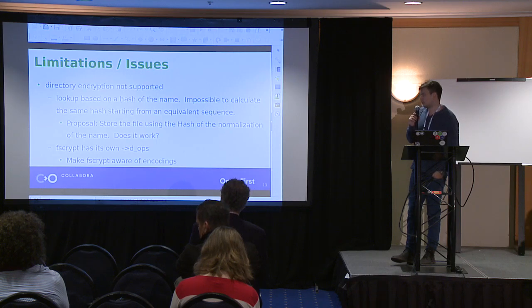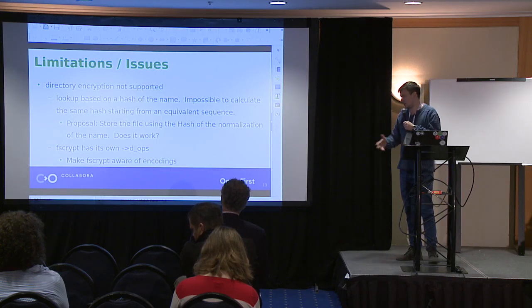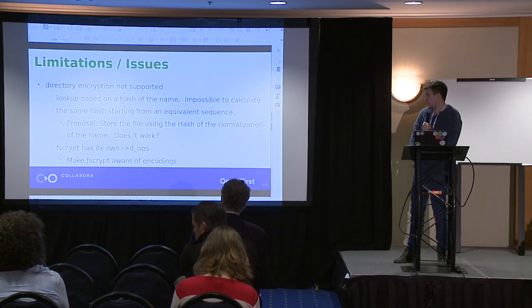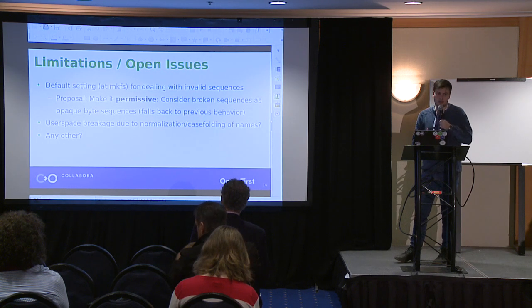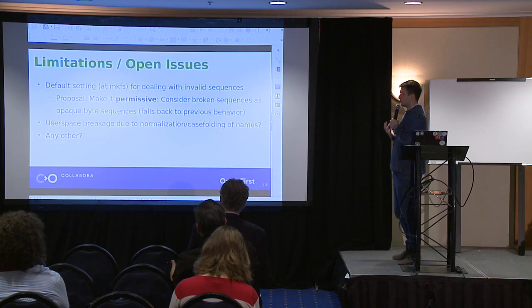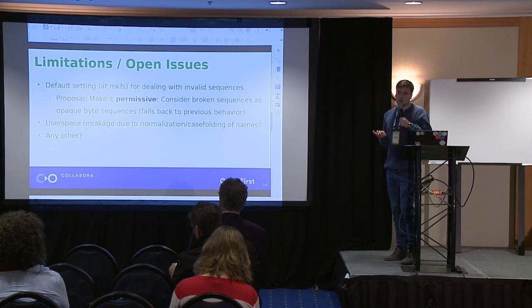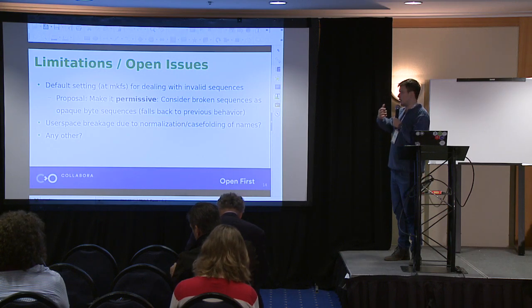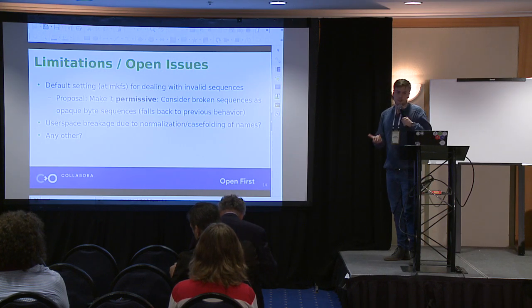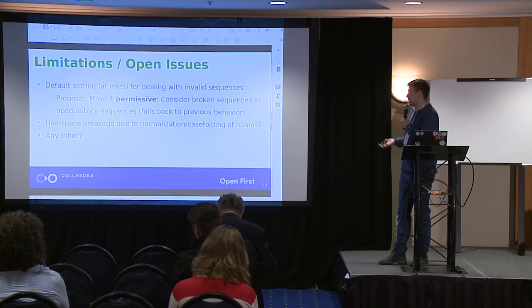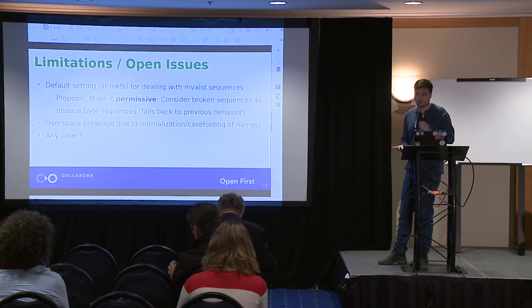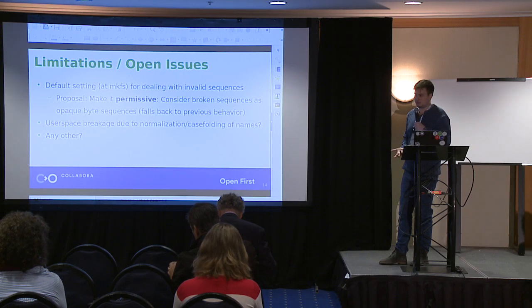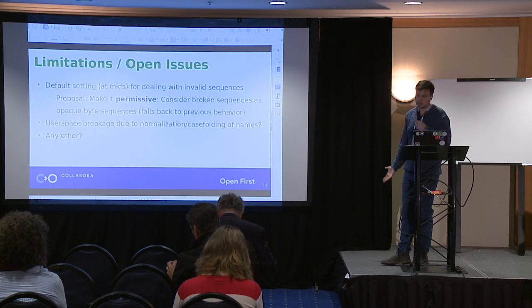There are small details like fscrypt and its dentry ops. My question is also regarding how to deal with invalid sequences — this is an ext4 policy question. What do we do when the file system faces an invalid character sequence? My understanding is that we should make it permissive: accept invalid sequences and treat them as opaque byte sequences, which would mean we fall back to the previous behavior. We make available a strict mode, but I don't see why you'd ever want to enable that.